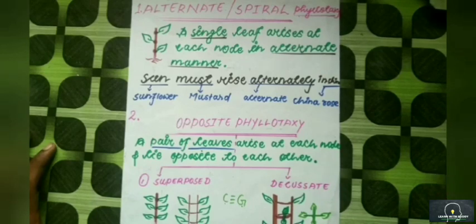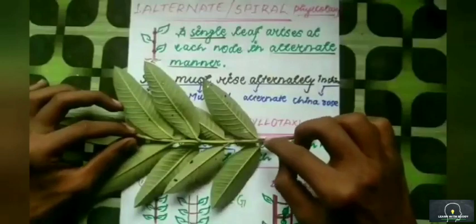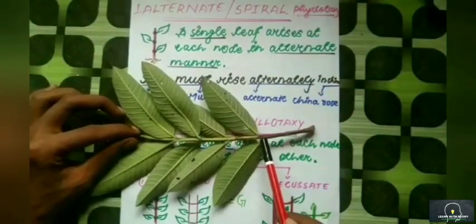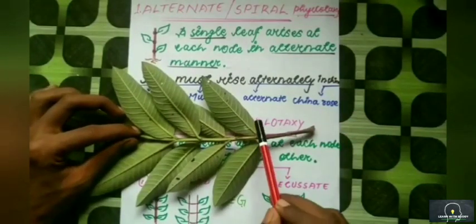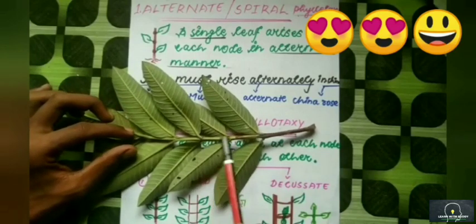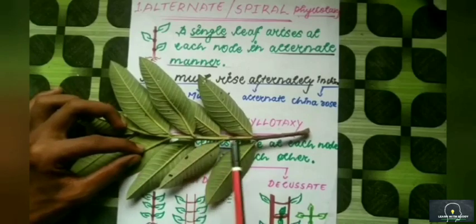Now let's learn the subdivisions of opposite phyllotaxy. First, superposed phyllotaxy. In superposed phyllotaxy, as you can see in this plant, two leaves arise from one node and they lie opposite to each other. But if you see the consecutive nodes, all the leaves lie in the same plane.